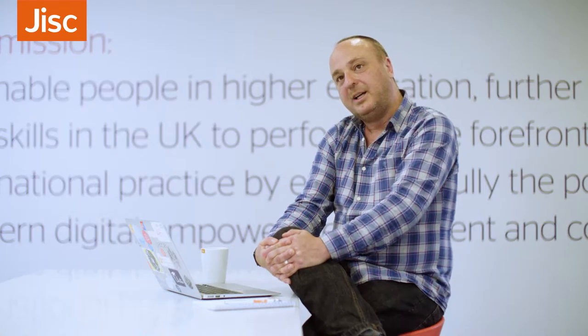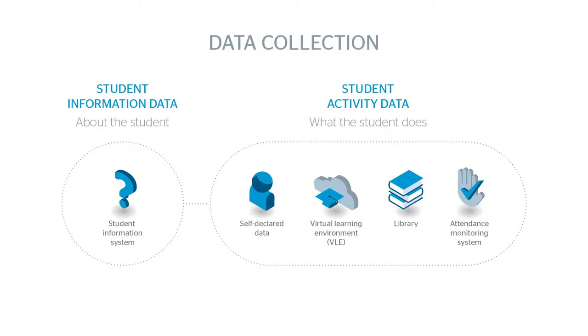Once we have the learning records warehouse, we need to get data in — that's done at the bottom layer. We broadly have two concepts. First, data about the student, which typically comes from a student record system, including data about the student, the courses they're taking, and what they've achieved. This kind of data is relatively static.